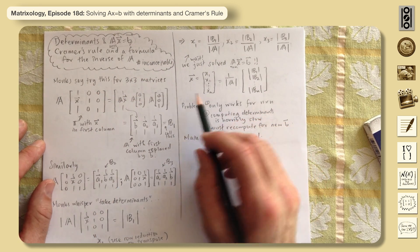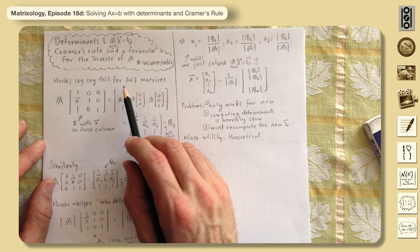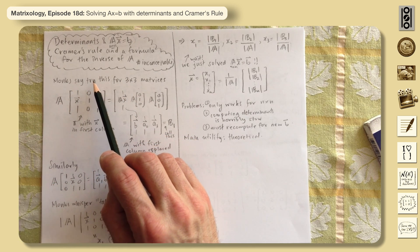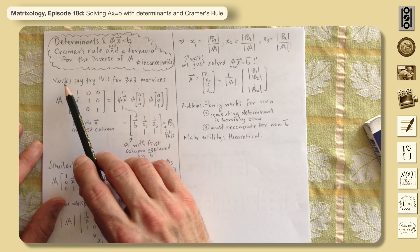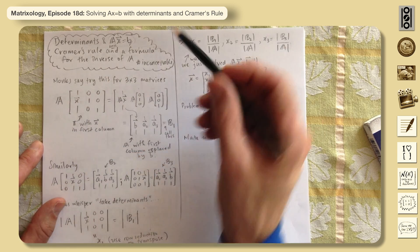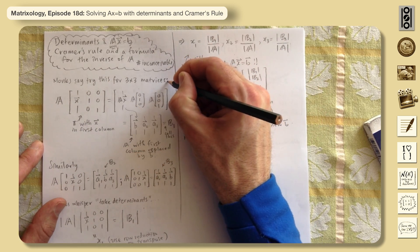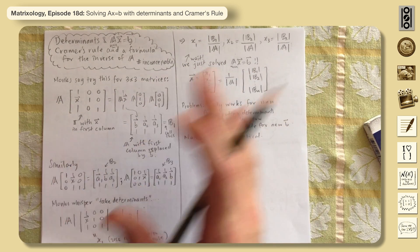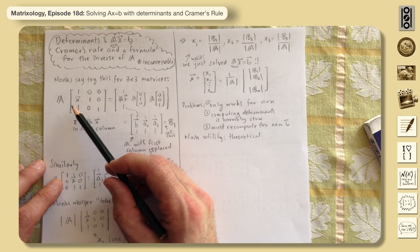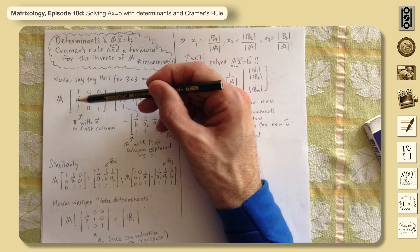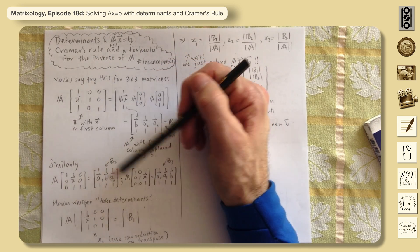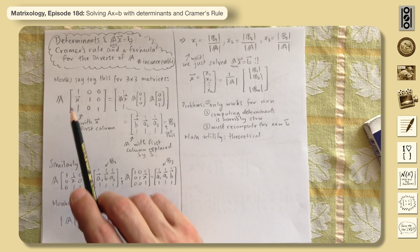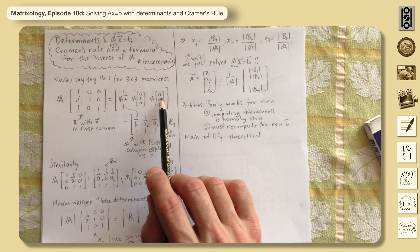Let's try this for 3×3 matrices. We'll do something a bit unusual: take the identity matrix and replace the first column by x. We'll be able to see it works for n×n matrices in general. Then we multiply through — this is abstract, but let's see how it works.